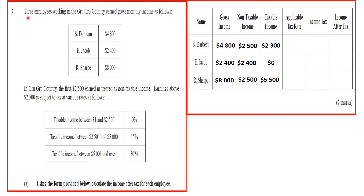Three employees working in the Google country earn gross monthly income as follows: X. Dabo $4,800, EJ Cup $2,400, and R. Sharp $8,000. Those are their gross incomes for the month in Google country.